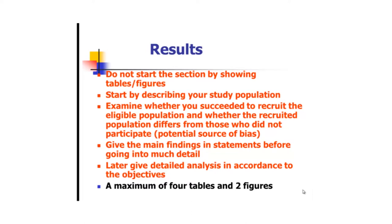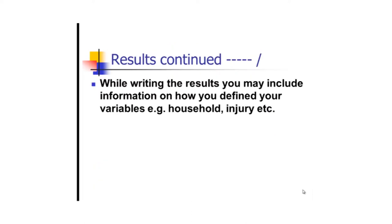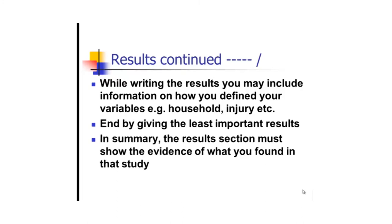While writing the results, you may also include information on how various variables were defined. This is debatable. Some people may wish to define certain variables in the methodology, which is acceptable, by saying a household was defined as or blood pressure measurement was done according to such and such a method, then you give a reference. All those definitions are supposed to be included either in the methodology section or in the results section. By giving the least important results, in summary, the results section must show the evidence of what you found so that when readers see your results, they may be convinced that what you are talking about is actually what you wanted to present.